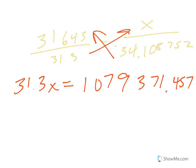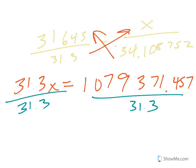You can always use your common sense to make sure that your answer makes sense. When I divide by the number in front of x, I end up with, to the nearest person, 34,485.